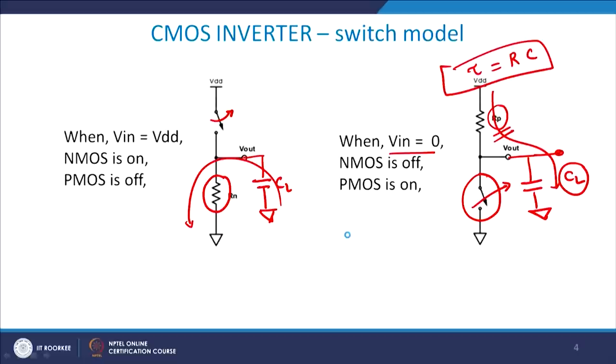Dynamic condition is when you have repeated switching. In the static case there is no power consumption, and the reason is very simple: in the static case you do not have any direct path between VDD and ground. Whenever you give 1 or 0, there is no direct path between VDD and ground, so you will never have a short-circuit current. This means static power dissipation levels are typically very small.